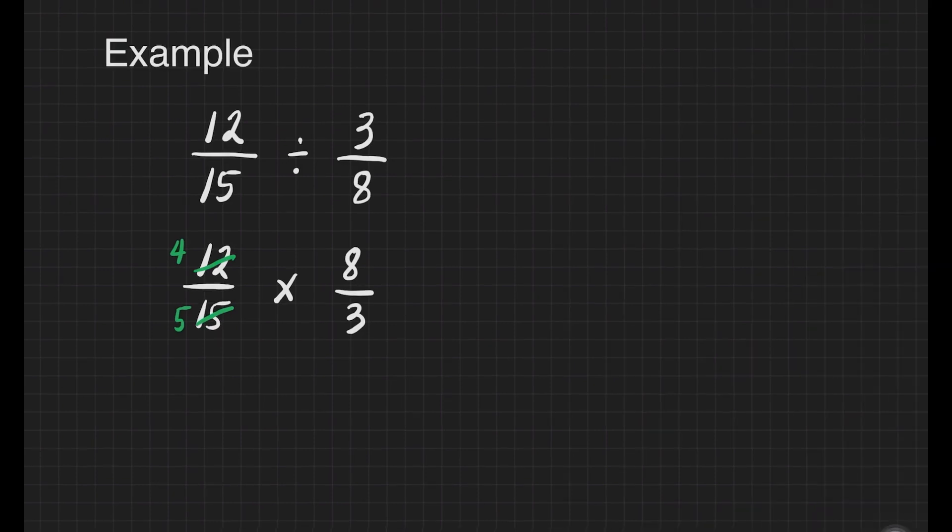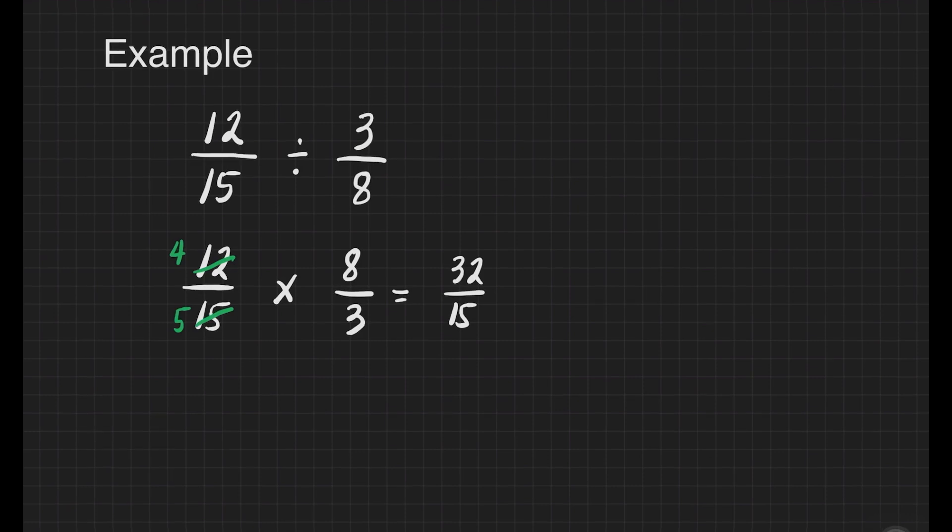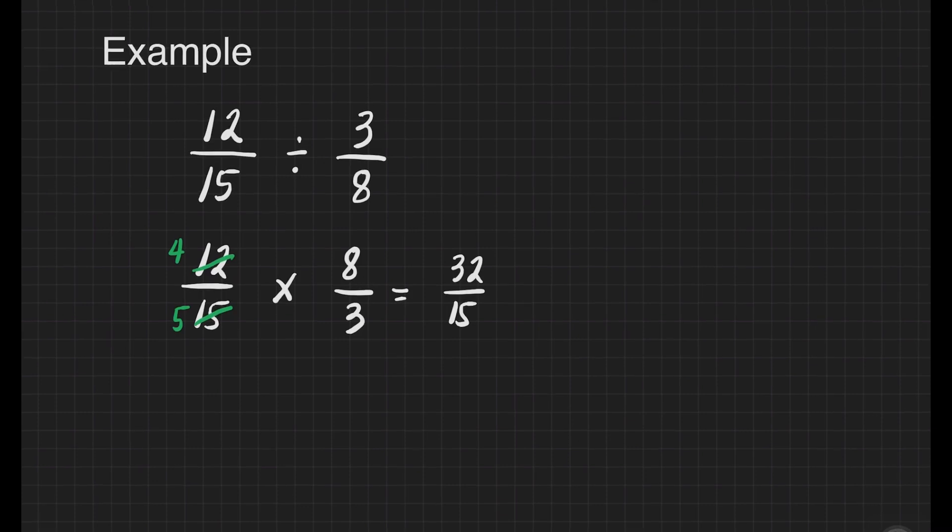So let's go to multiplication. Four times eight is equal to thirty-two. Five times three is equal to fifteen. Since 32/15 is an improper fraction, it is better if we will change it into mixed number. How to change 32/15 to mixed number? Just divide the numerator by its denominator. Let's try that.